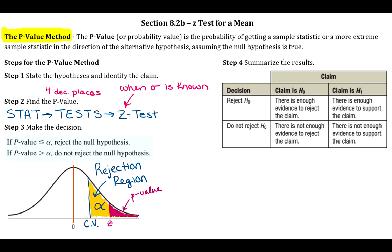The key takeaway: if your p-value is less than or equal to alpha, reject the null hypothesis. If your p-value is greater than alpha, do not reject the null hypothesis. Step four is the exact same as step five from the traditional method — determine where your claim is, figure out your decision, and make one of those four summary statements at the end of your hypothesis test.